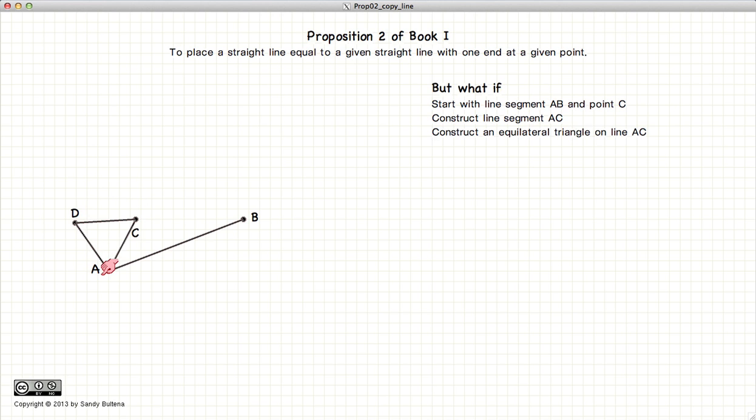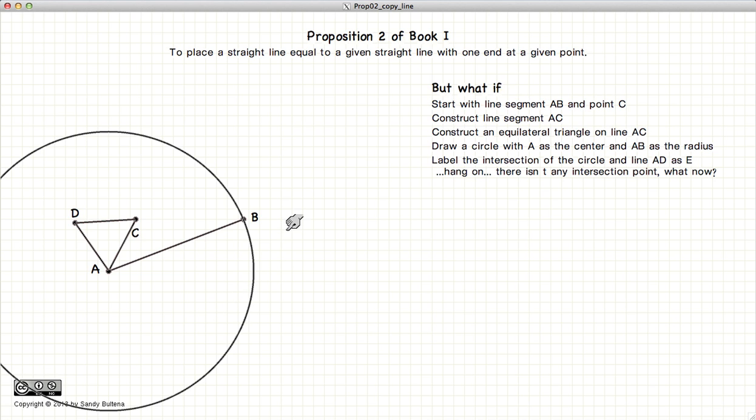And now we draw a circle with A as the center, AB as the radius. And label point E, but there is no intersection. So what do we do now?